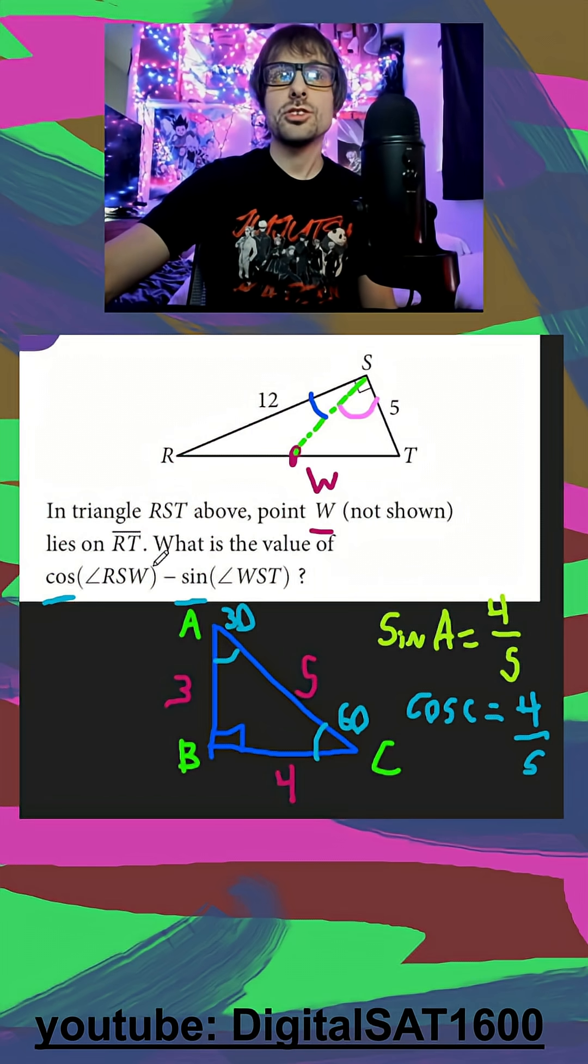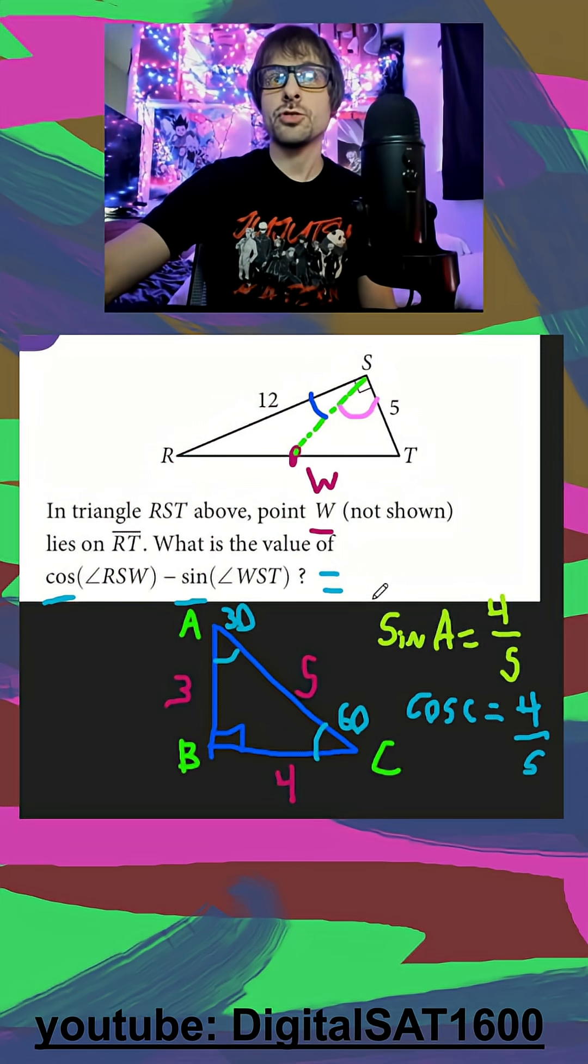S is a 90 degree angle. So RSW plus WST is 90 degrees. So no matter what we fill in for those, 30, 60, etc., the cosine of one angle and the sine of its complement are equal. So if I subtract them, I'm going to get zero here.